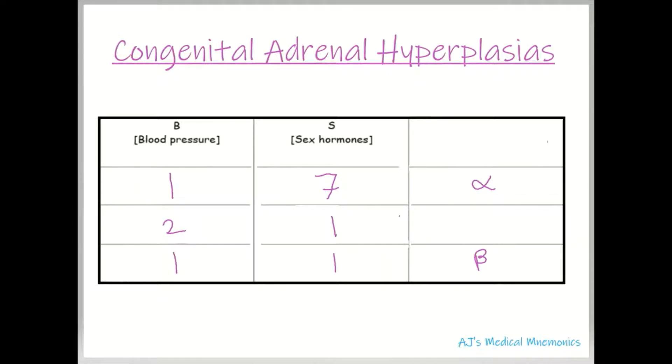You'd draw it out like this. In the first column we have blood pressure, and in the second column we have sex hormones — B and then S.